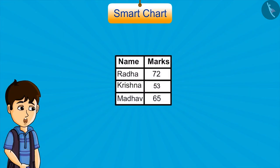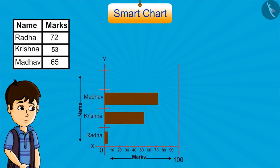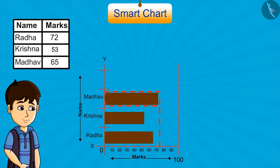For example, look at this data. Here are the marks scored by three students in maths. Radha got 72, Krishna got 53, and Madhav got 65. Let's represent this in strips. If we place the strips like this, is it right? You can see that according to the chart, Radha got 65 and Madhav got 72.